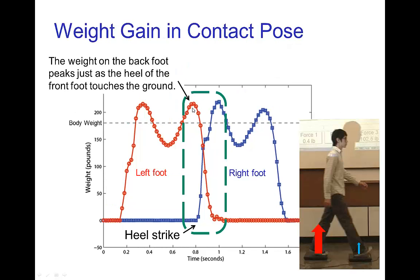This spike that we see here in the weight, this is occurring in this part of the contact pose. We see that from the right foot, which is the front foot, here is where the heel strike occurs. Weight is starting to be transferred to the right foot and at that point the left foot, which is the rear foot, has a spike of weight. There's a very significant amount of weight gain at the start of the contact pose.